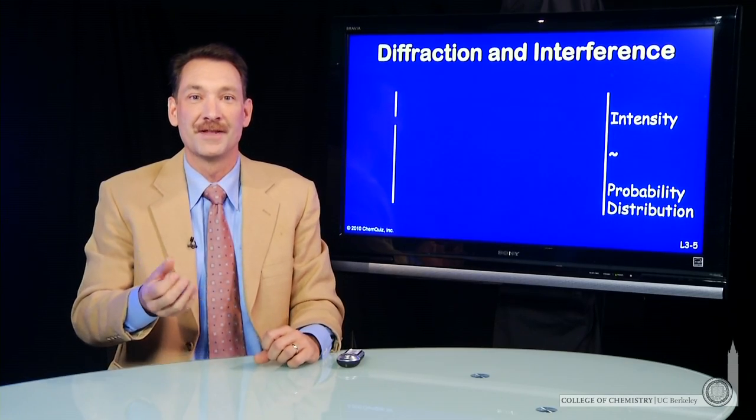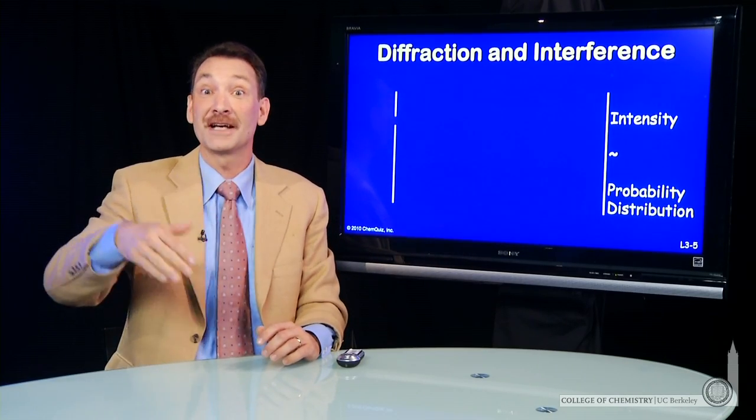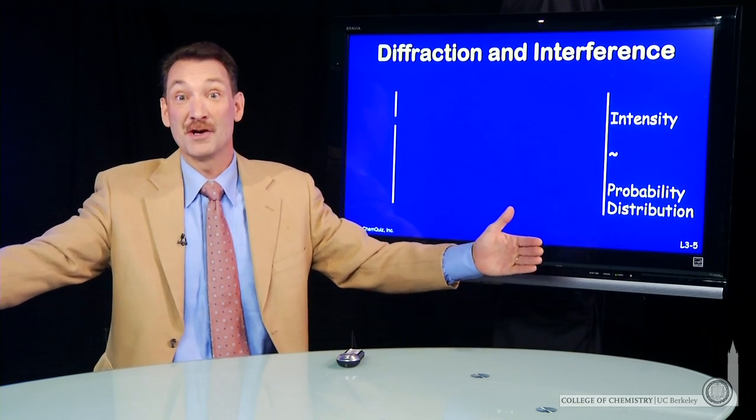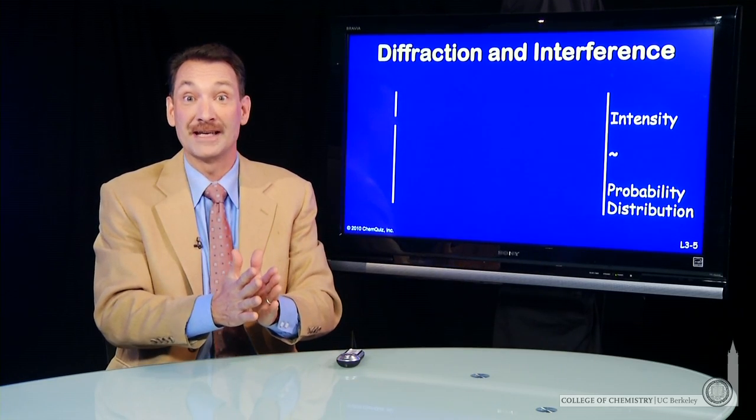When you talk about electromagnetic waves, the waves are properties of an electric and magnetic field. And they can be very long, like radio waves, or they can be very short, like gamma waves.